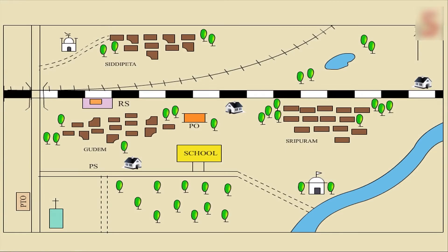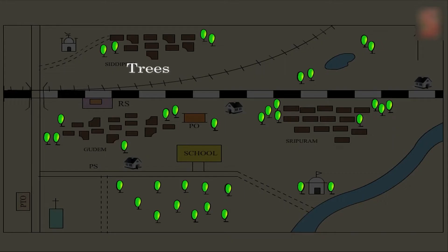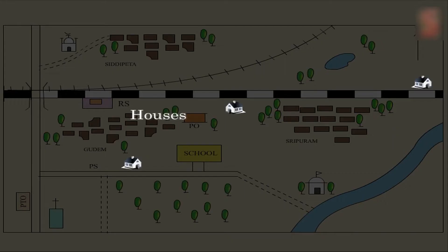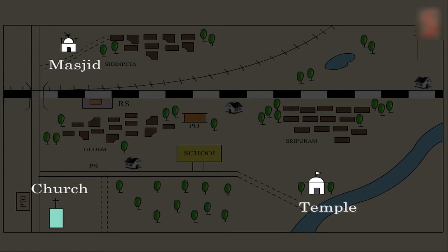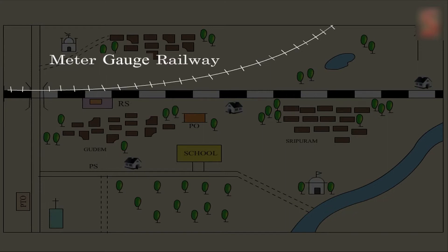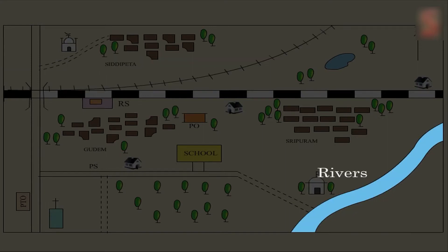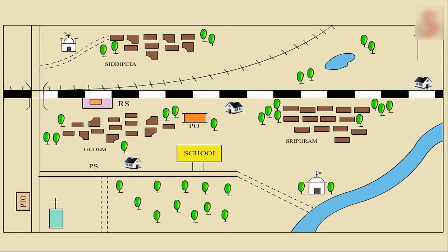Symbols are used in maps to point to any physical object on the map. Trees, houses, places of worship, railway lines, rivers etc. are some of the examples that are marked as symbols on the maps.